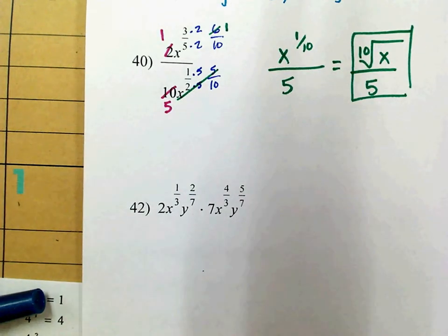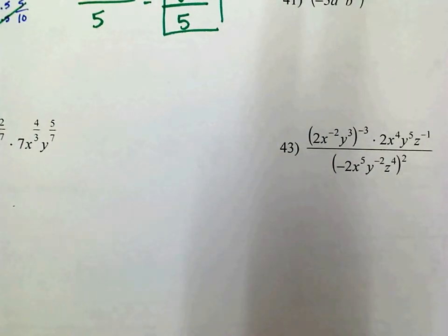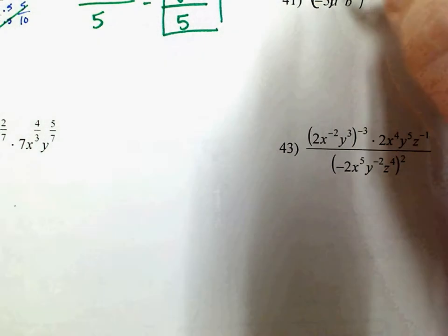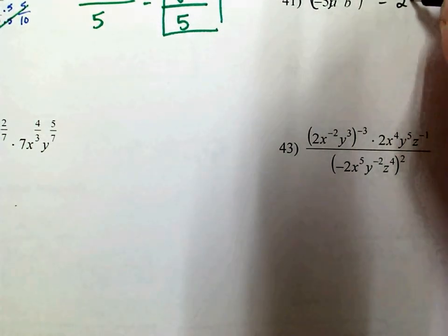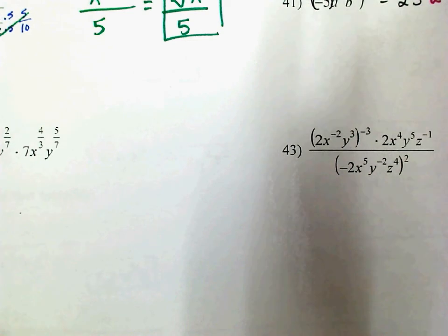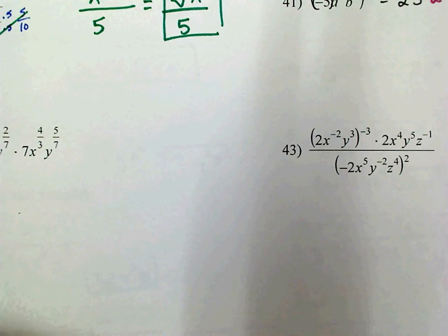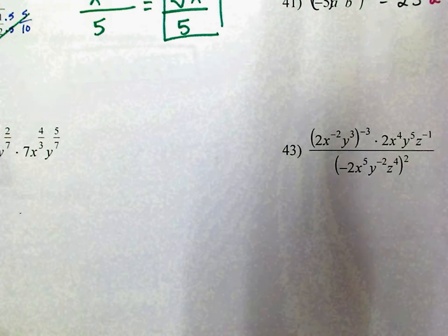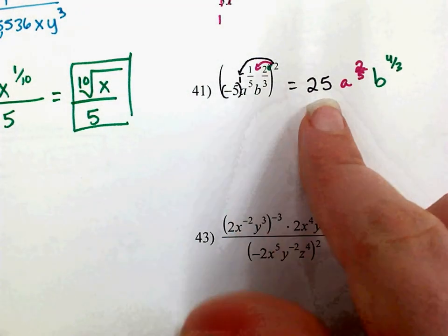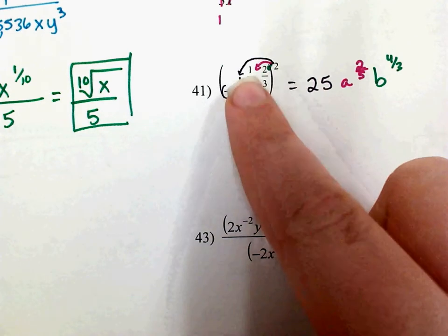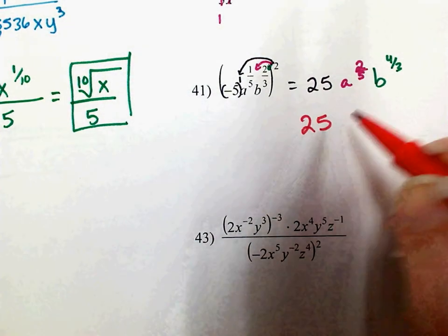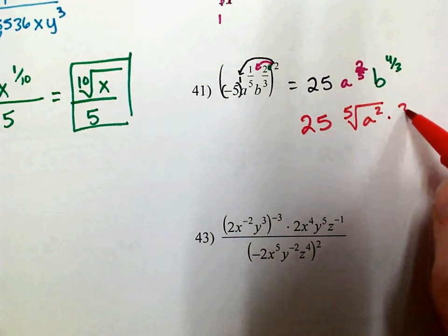On 41, I'm going to distribute my power. Negative 5 to the 1st squared means 1 times 2 is 2, and negative 5 squared is positive 25. Then a to the 2 times 1 fifth is 2 fifths. And 2 times 2 thirds gives b to the 4 thirds. Written as roots, that is 25 times the 5th root of a squared times the cubed root of b to the 4th, which could technically be simplified further.